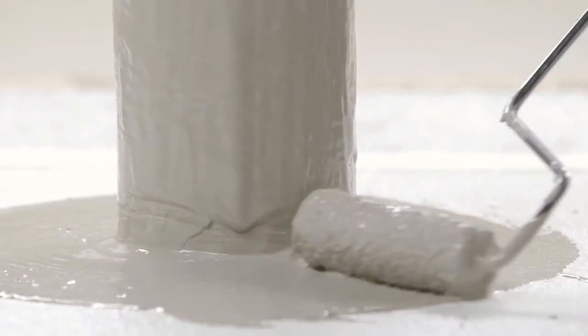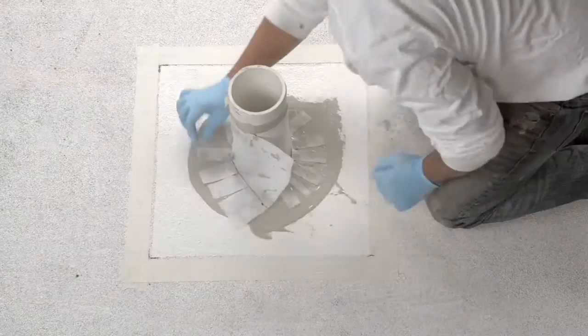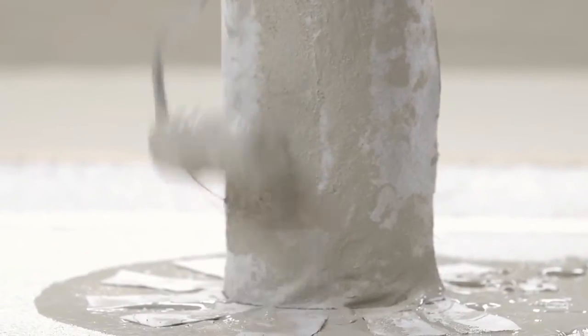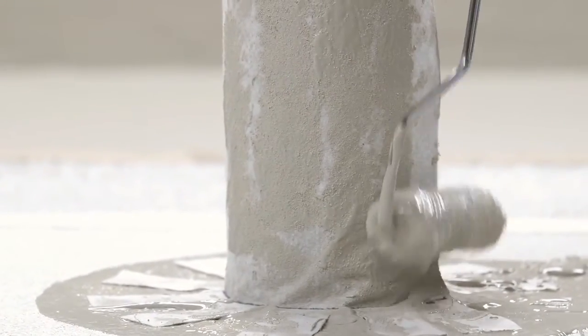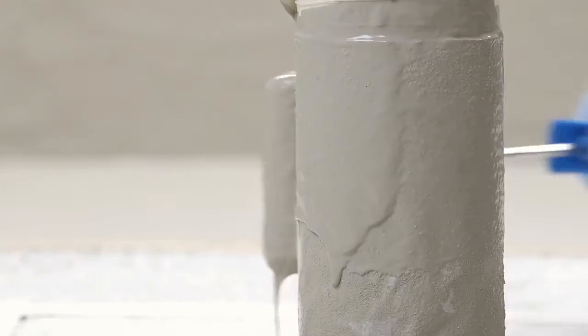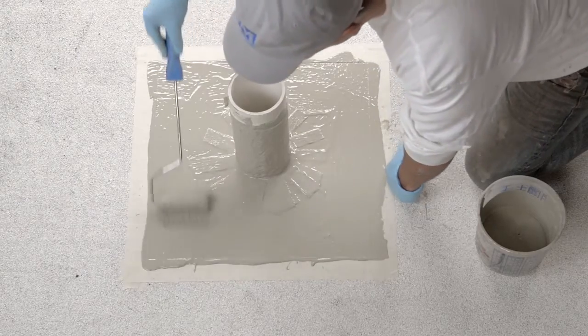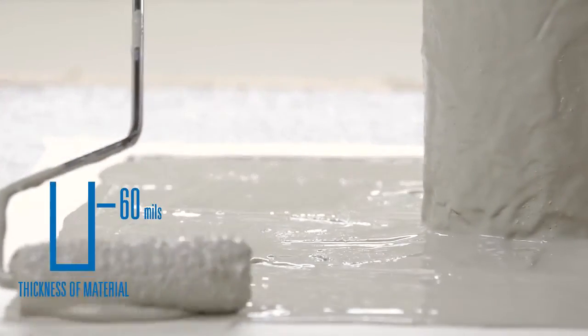Apply the resin, leaving no voids. Embed the scrim using a semi-dry roller or brush. Saturate it from the top down, applying any additional resin as needed.